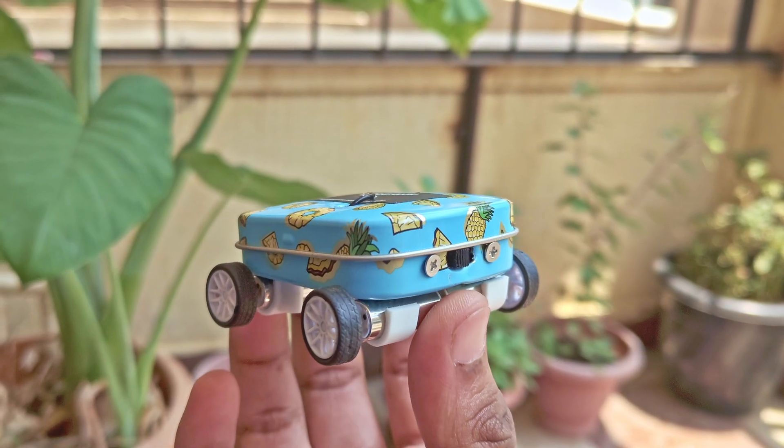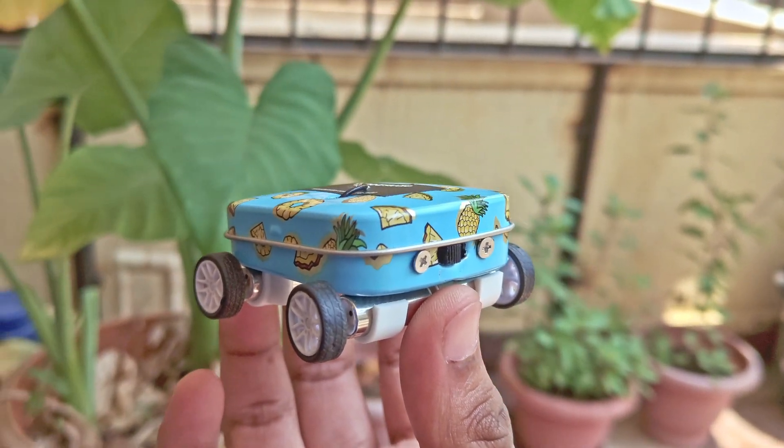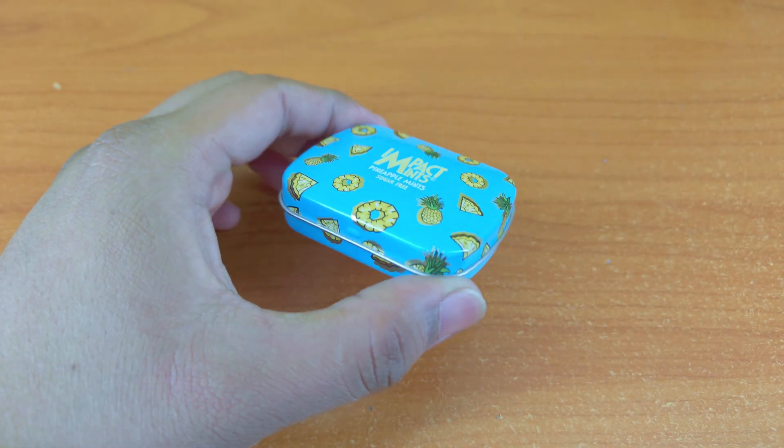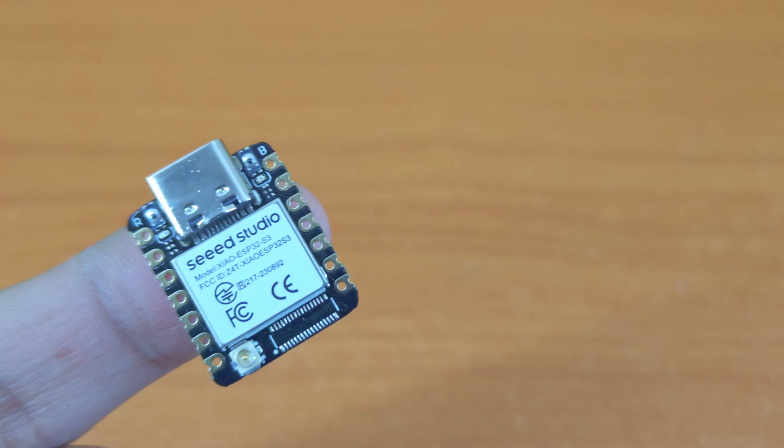We're going to put an entire remote-controlled car inside this tiny mint box. For this, we obviously need this mint box. And the entire project is made possible by this tiny beast, the Seed Studio Xiao ESP32 microcontroller board.